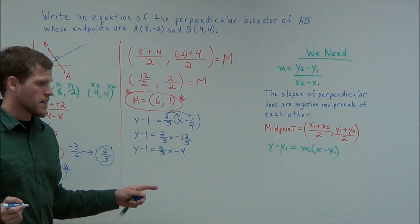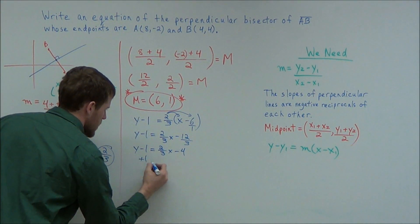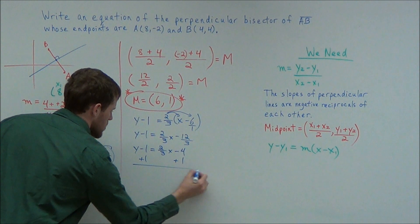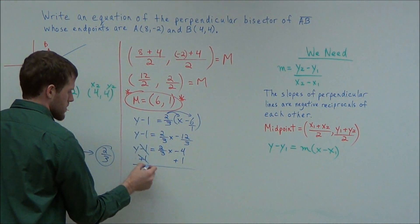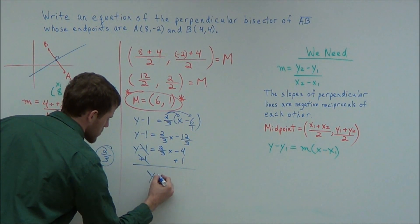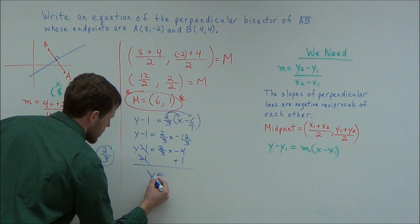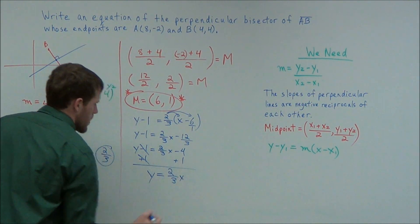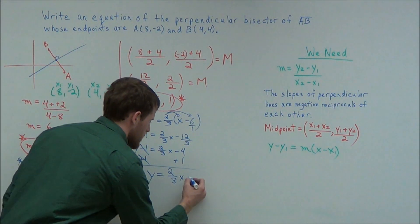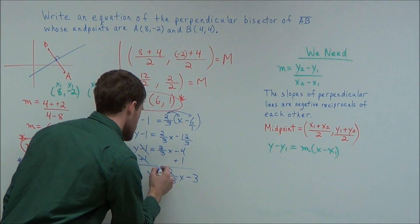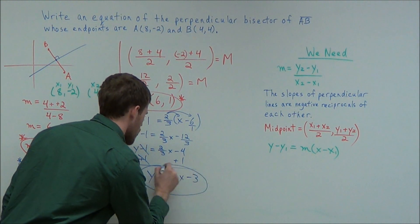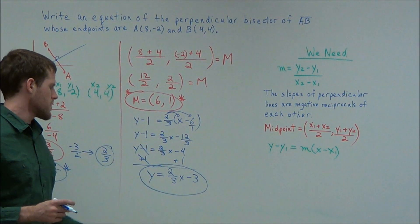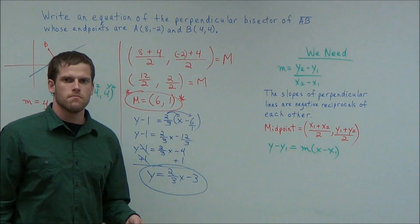So the last step to get this to say y equals, we're going to add 1 to both sides. Now minus 1 plus 1 will cancel, and we have y equals, and we have 2 thirds x, and now negative 4 plus 1 is negative 3. So our equation for our perpendicular bisector is y equals 2 thirds x minus 3.